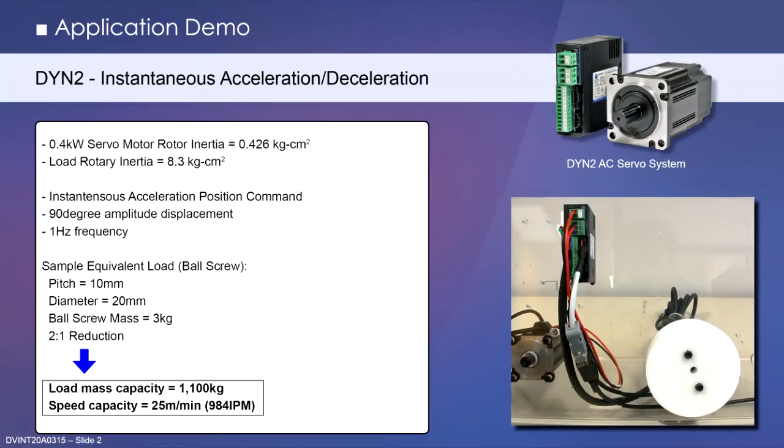So let's look at the DYN2 system first. The motor coupled load inertia apparatus is approximately 20 times the 400 watt servo motor rotor inertia. The servo drive will command an instantaneous position reference of 90 degree amplitude displacement, then reverse at 1 Hz frequency pattern. This command is generated by the DMM DRV program using step test movements that can be easily replicated by the user.